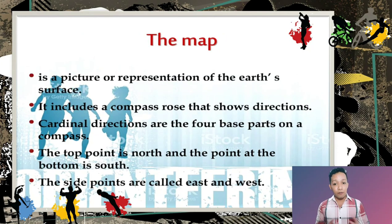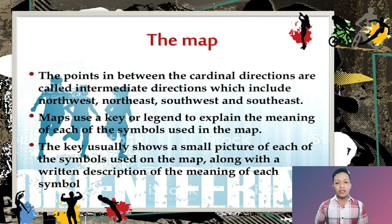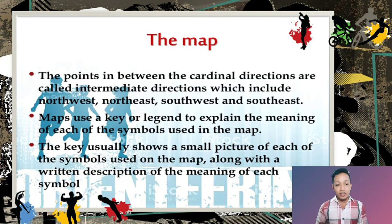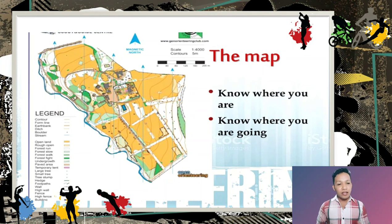The map is very important in orienteering — it is a picture and representation of the earth's surface. It includes a compass rose showing directions. Cardinal directions are the four base points on a compass: north at the top, south at the bottom, east and west on the sides. Intermediate directions between cardinal points include northwest, northeast, southwest, and southeast. Maps use a key or legend to explain the symbols used, showing a small picture of each symbol with a written description. An example map shows the orienteering course with color and line legends, helping you know where you are and where you are going.